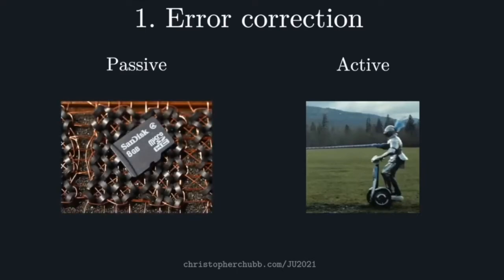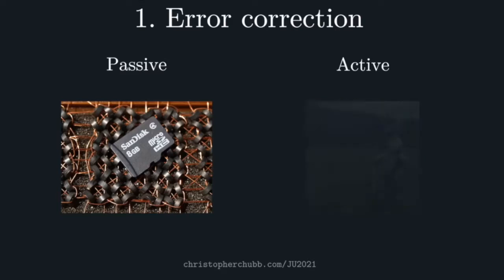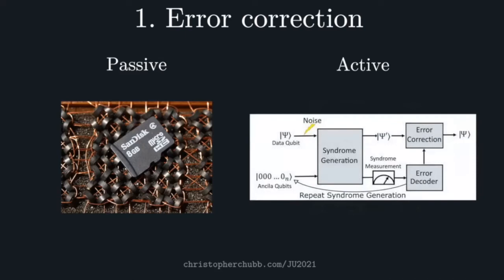Both passive and active error correction are used classically, but for basic things like memories, passive error correction is relatively viable. In its simplest form, magnetic cores — a piece of iron — are essentially self-correcting classical memory. That's passive error correction. Quantumly, however, there are a series of no-go results meaning passive error correction is generally considered too high of a bar, so most error correction work for near-term applications is focused on active error correction.